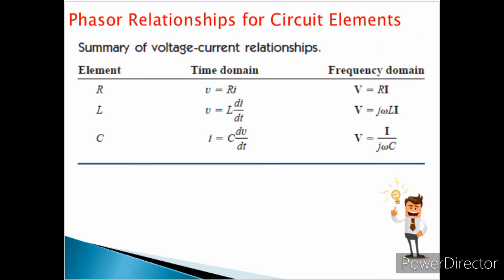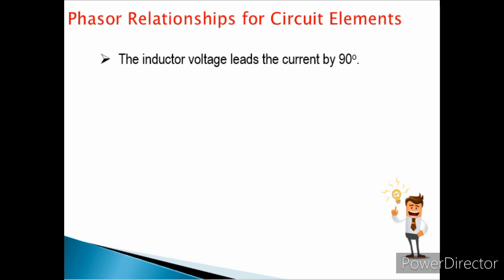This is the summary of voltage-current relationships for resistor, inductor, and capacitor. For the time domain: for the resistor, V is equal to R times I; for the inductor, V is equal to L times dI/dt; and for the capacitor, I is equal to C times dV/dt. These equations are derived from Faraday's law. For the frequency domain, the reactance of the inductor is j omega L, and the capacitive reactance is one over j omega C.